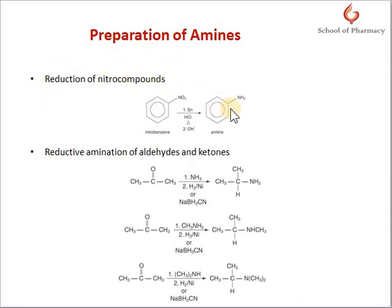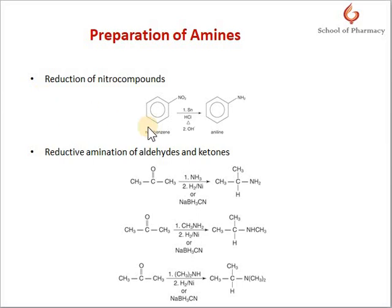Reduction of nitro compounds: aromatic amines are normally prepared by the reduction of the corresponding aromatic nitro compounds. These nitro compounds on reduction yield primary amines, and this method is particularly useful for the preparation of aromatic amines, although it also works for aliphatic amines. These reductions are affected by various means — either chemical reduction or catalytic hydrogenation. Chemical reduction uses stannous chloride with hydrochloric acid, or alcoholic ammonium sulfide; catalytic hydrogenation uses hydrogen with a catalyst.